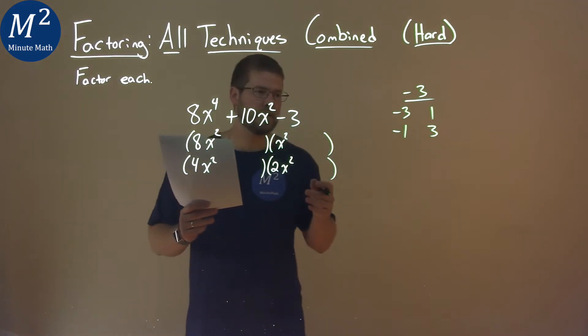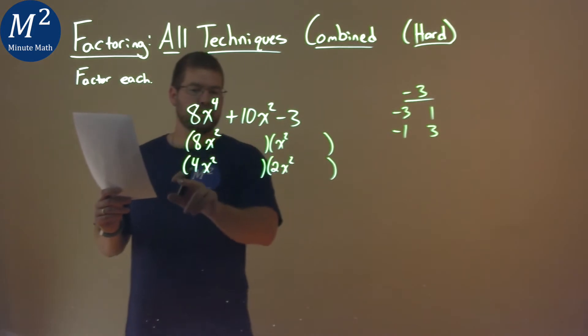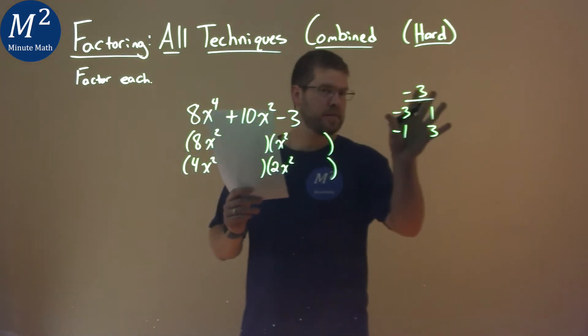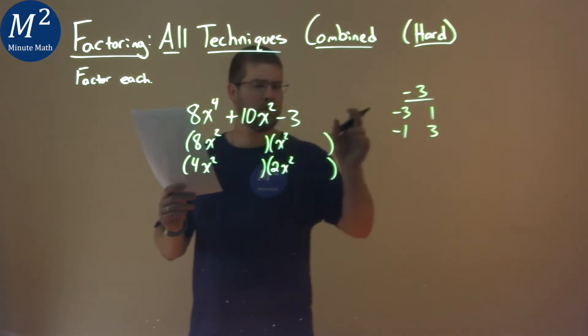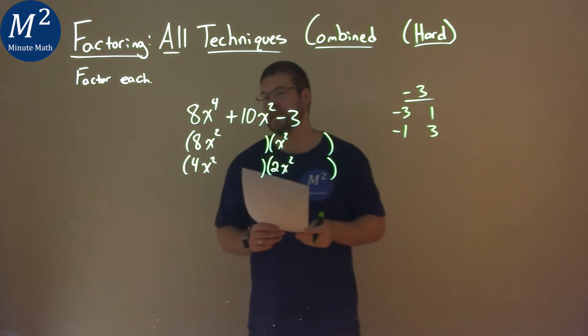With that information, we have to ask ourselves: one of these, 8 or 4, multiplied by one of these pairs, plus 1 or 2 times the other one of the pairs, gets us a positive 10.